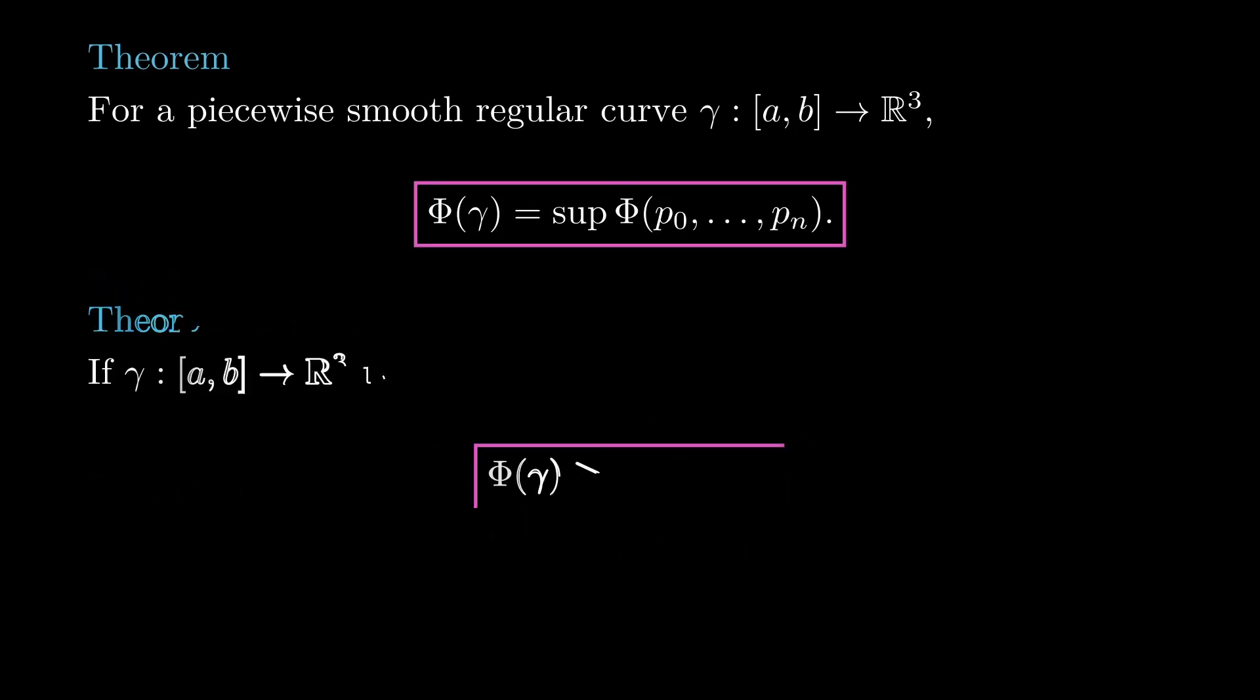Now this theorem finishes off the problem we began last lesson. For a curve inside the unit sphere, its total curvature is always at least its length. Last time we proved it for piecewise linear curves, and due to the theorem above, we can approximate any piecewise smooth curve by piecewise linear curves with arbitrarily close length and total curvature.